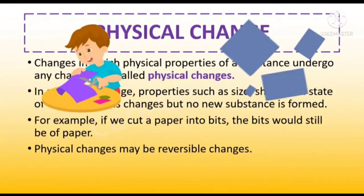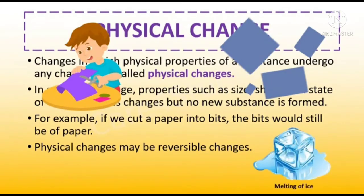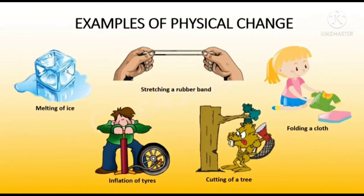For example, if we cut a paper into bits, the bits would still be of paper. Most of the physical changes are reversible changes. For example, melting of ice is a physical change as well as a reversible change. Some examples of physical changes are melting of ice, stretching of a rubber band, folding a cloth, inflation of tires, cutting of a tree, etc.